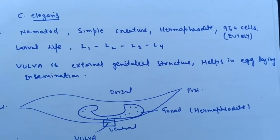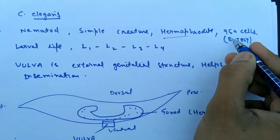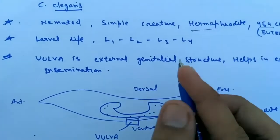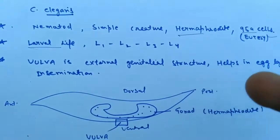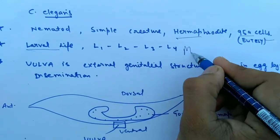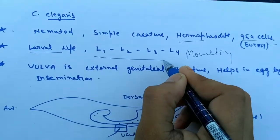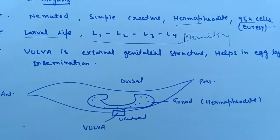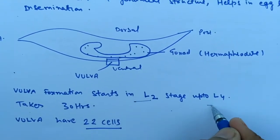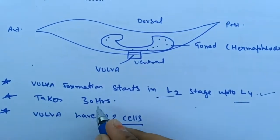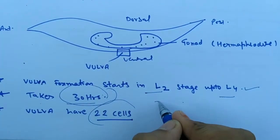C. elegans is hermaphrodite with 959 cells. It has a life cycle where larval transformation occurs through molting in four stages, L1 up to L4. The vulva formation starts in L2 stage and completes in L4 stage. It takes about 30 hours and the full form will have 22 cells.